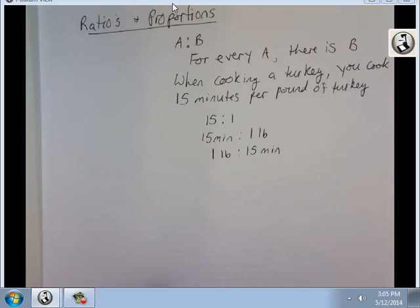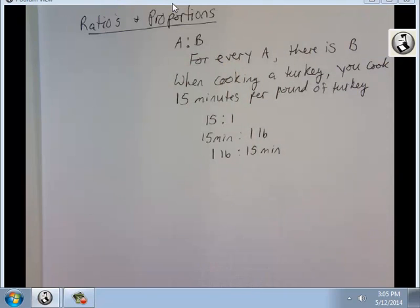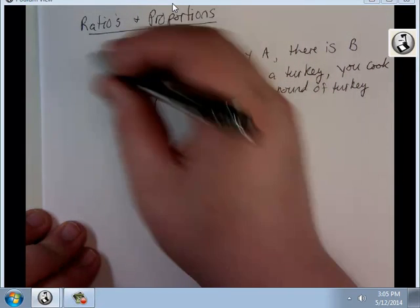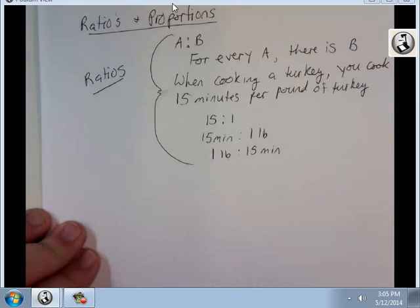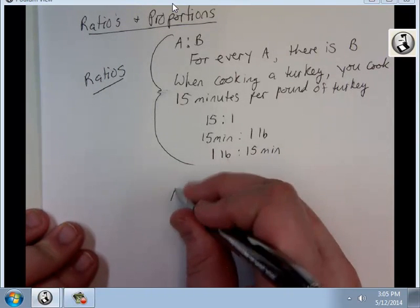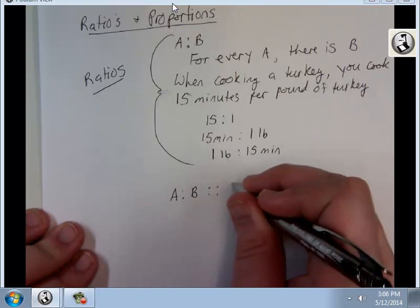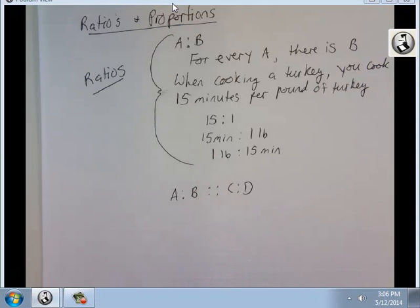A ratio deals with just one relationship, A to B. So this is ratios. Proportions are two relationships. A is to B at the same time C is to D. So this is a proportion.